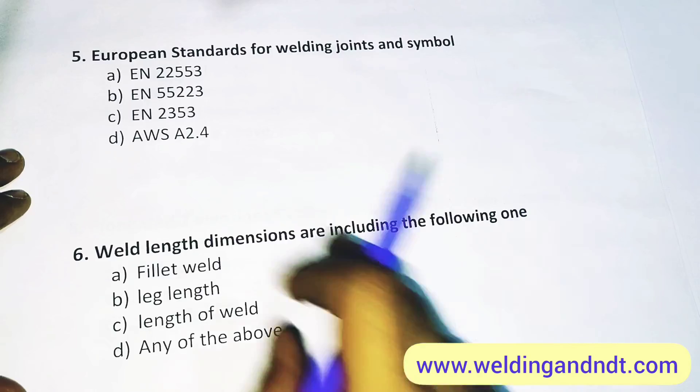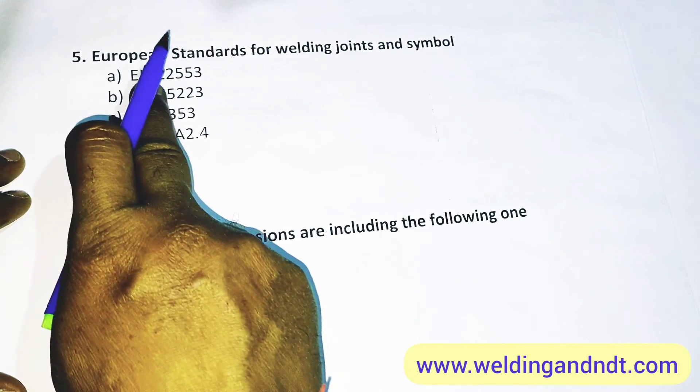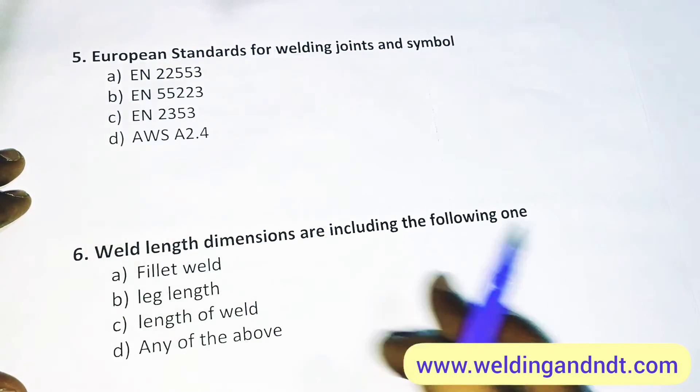We will move to question number 5. European standard for welding joints and symbol is nothing but EN 22553, so A will be the answer.